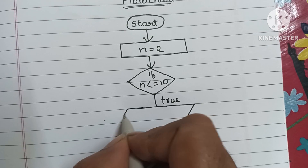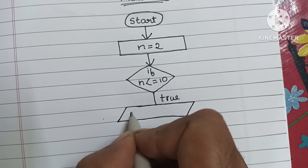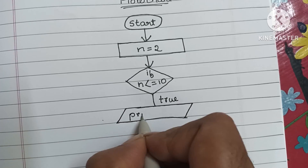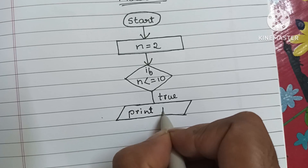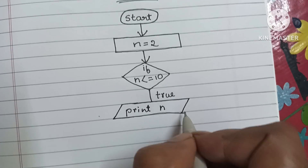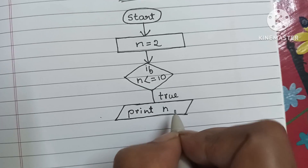We print n. This is the output. The output value is written within a parallelogram shape — output is written within a parallelogram shape.